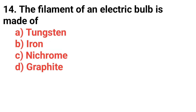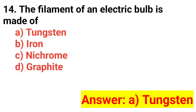Question number fourteen: The filament of an electric bulb is made of? The correct answer is option A: tungsten.